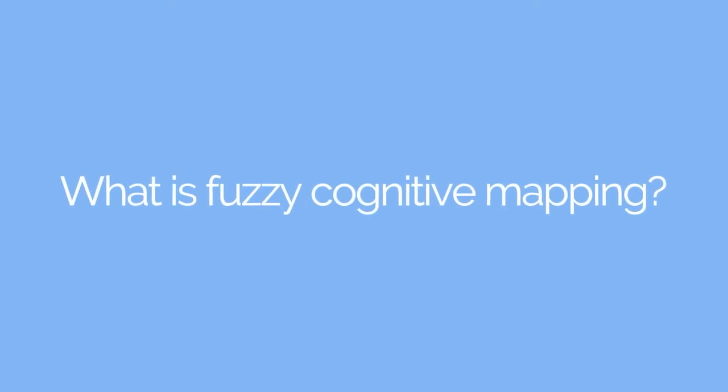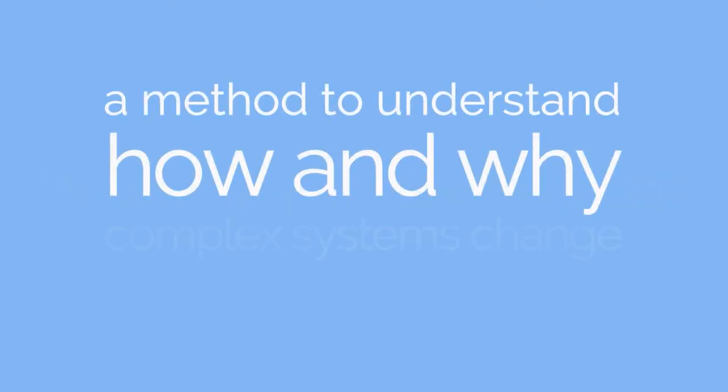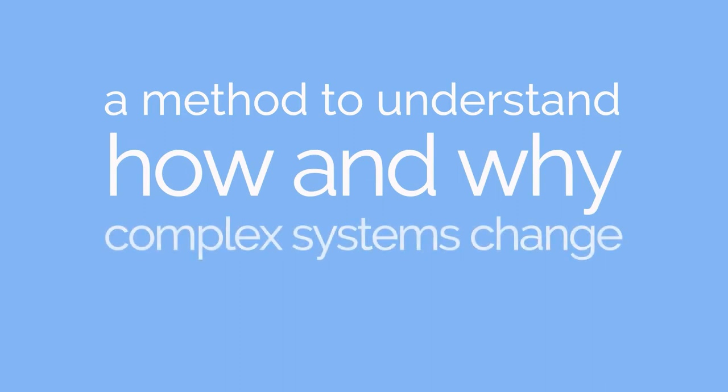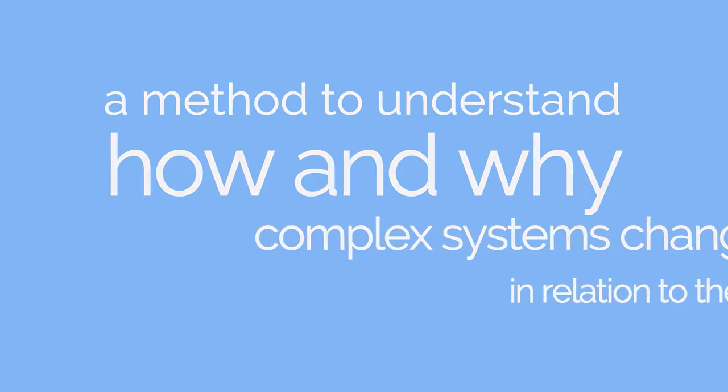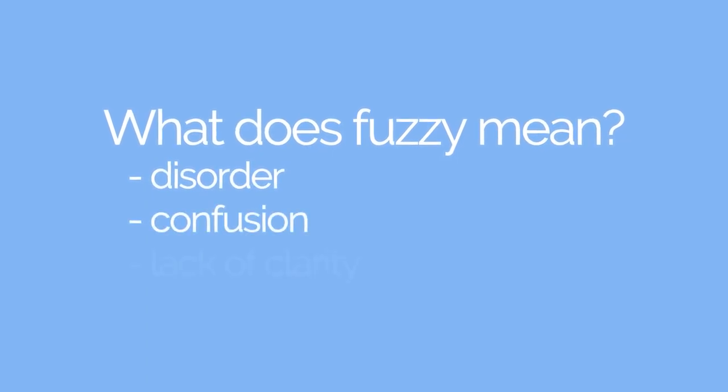What is fuzzy cognitive mapping? Fuzzy cognitive mapping is a method to understand how and why complex systems change in relation to their own components. But first, what does fuzzy mean? It is often related to disorder, confusion, or lack of clarity.